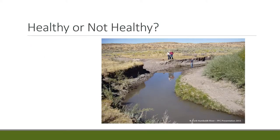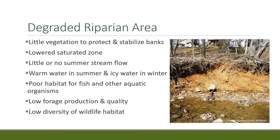An unhealthy riparian system has attributes basically opposite to what's healthy: little vegetation to protect the stream banks, a lowered saturation zone or lowered water table, little or no summer stream flow, warmer water in the summer and icy water in the winter, poor fish and aquatic organism habitat, and low forage production and low diversity of habitat.